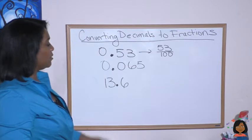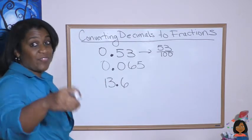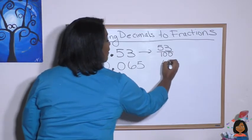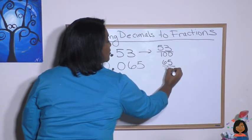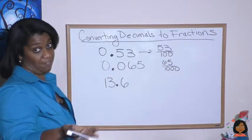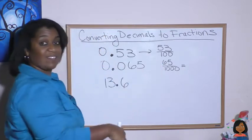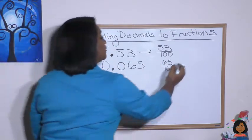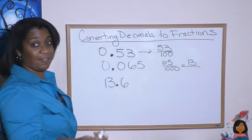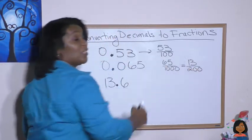What about 0.065? The 5 is in the thousandths place, so this is 65/1000. Both numbers can be divided by 5. 65 divided by 5 is 13, and 1000 divided by 5 is 200. Since 13 is a prime number, we cannot simplify anymore.